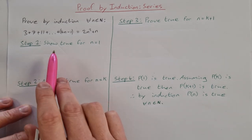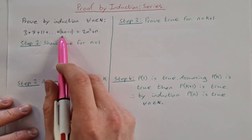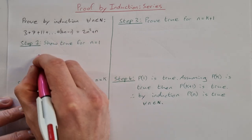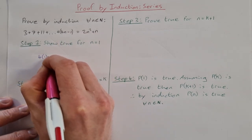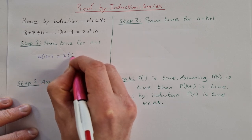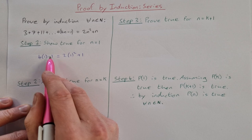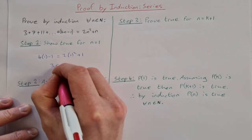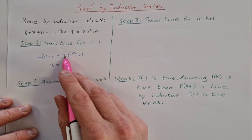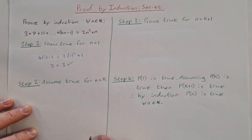Step 1 is you always show it true for n equal to 1. So that'll be filling in 1 here and here. So that's 4 times 1 minus 1 equals 2 times 1 squared plus 1. 4 times 1 is 4 minus 1 is 3. 1 squared is 1 times 2 is 2 plus 1 is 3. So that shows that it is true for n equal to 1.